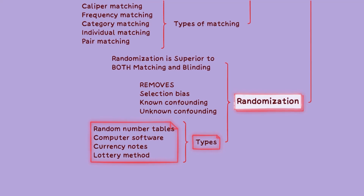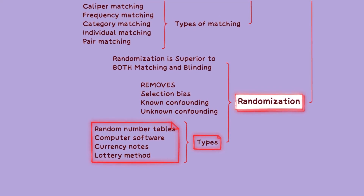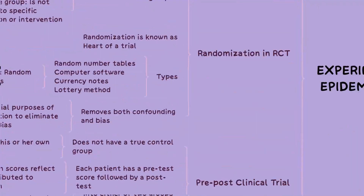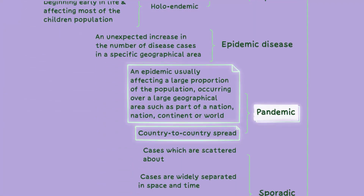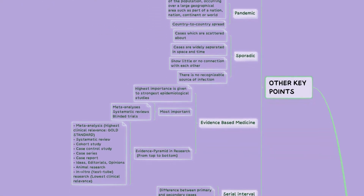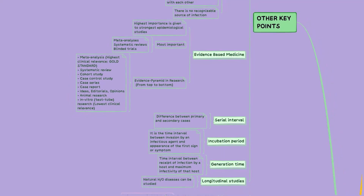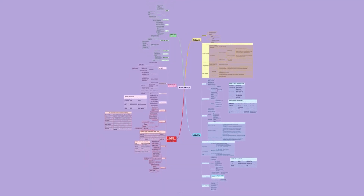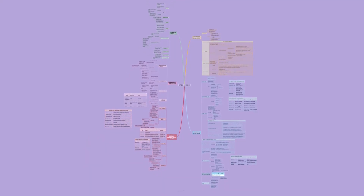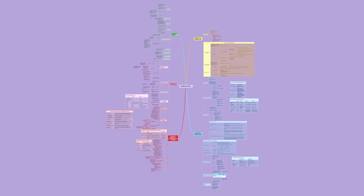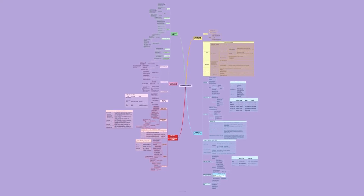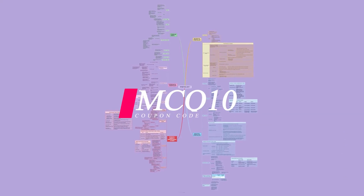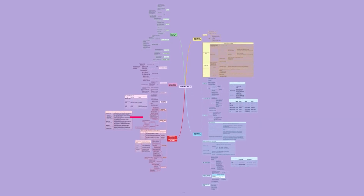By addressing and minimizing these potential errors, epidemiological studies can improve the validity and reliability of their findings. Some other key points related to epidemiology, such as endemics, pandemics, etc., can be noted from this section of our mind map. With this, we have come to the end of this video discussion on basic concepts of epidemiology. We hope we have been able to help you revise some important topics. You can now access our MCQ series at a lower price — use coupon code MCQ10 for a 10% discount. Happy learning!